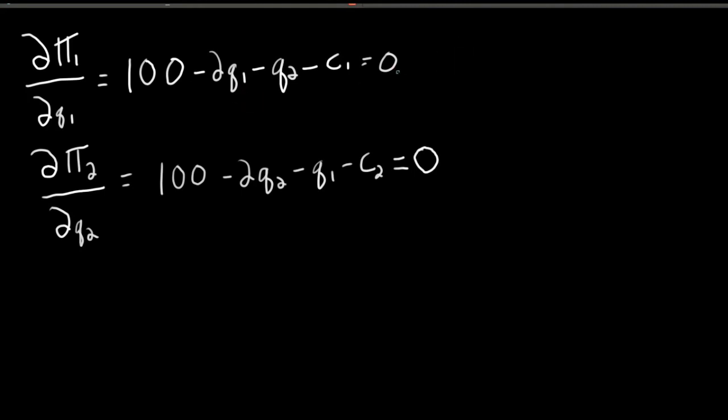So what does this say? If we solve for Q1, so this implies that Q1, we will call it Q1 star, because this is the equilibrium, must equal 100 minus Q2 minus C1 over 2. And we can do the same thing here.